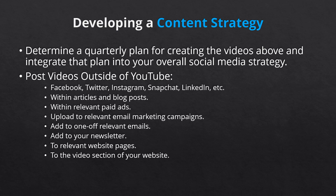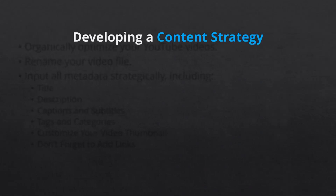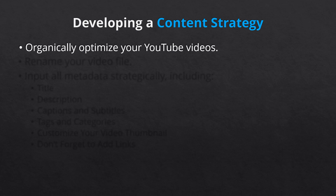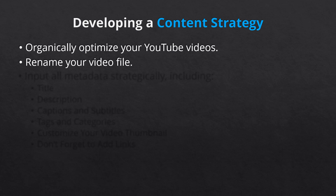Next up, organically optimize your YouTube videos. Before you upload a new video to YouTube, you must make sure it's organically optimized. This is similar to optimizing your profile image and banner as detailed earlier, but a bit more in-depth. First, there's renaming your video file. Before you upload your new video to YouTube, create an SEO-optimized file name. Use Google Trends or a paid keyword tool to name and save your video with relevant keywords.